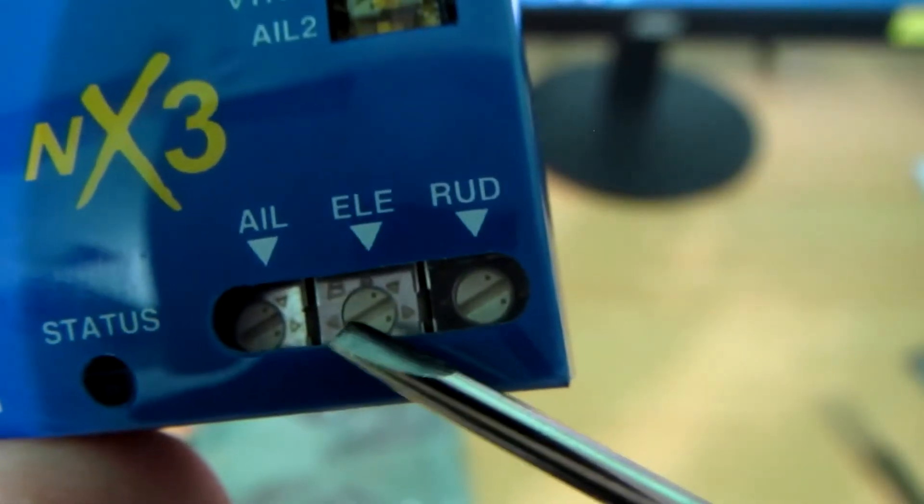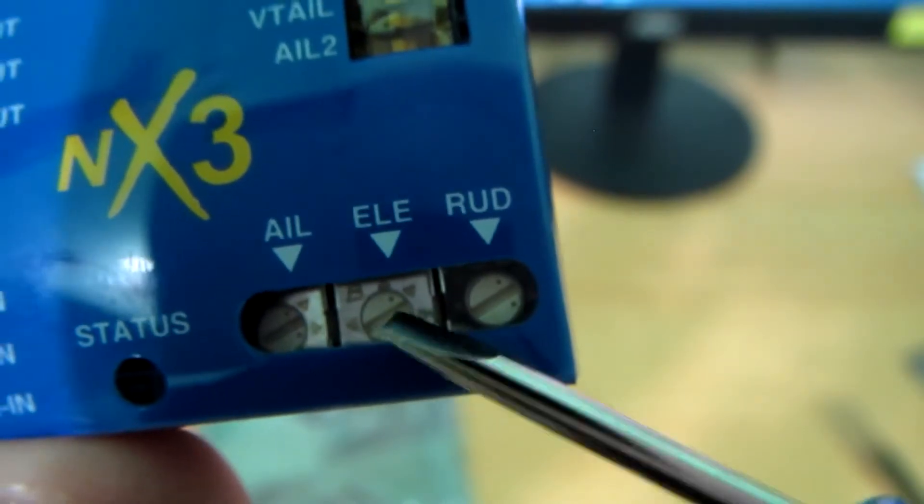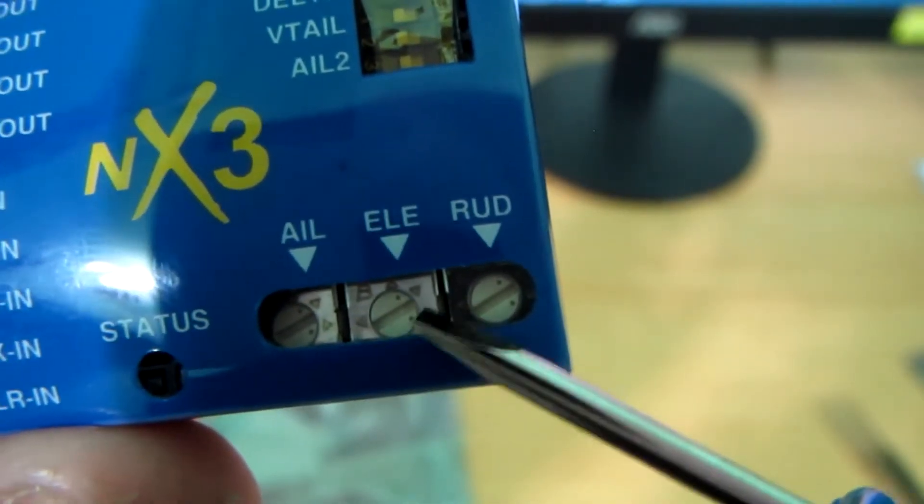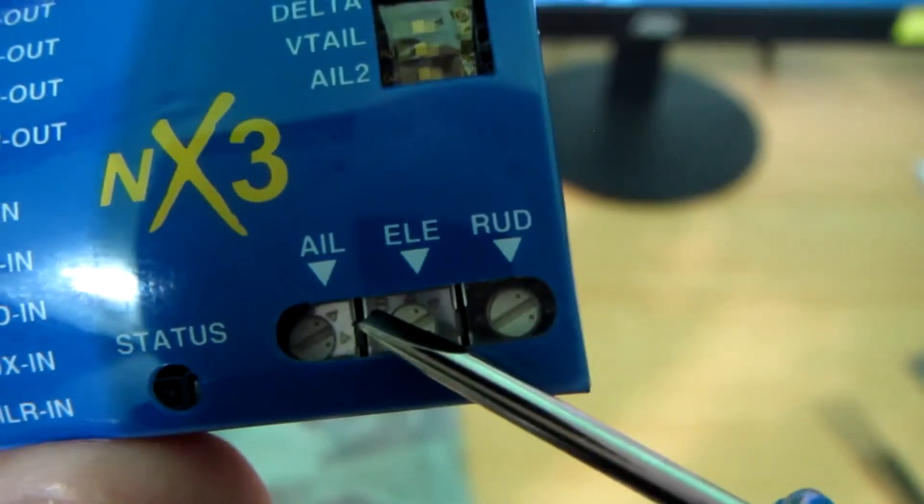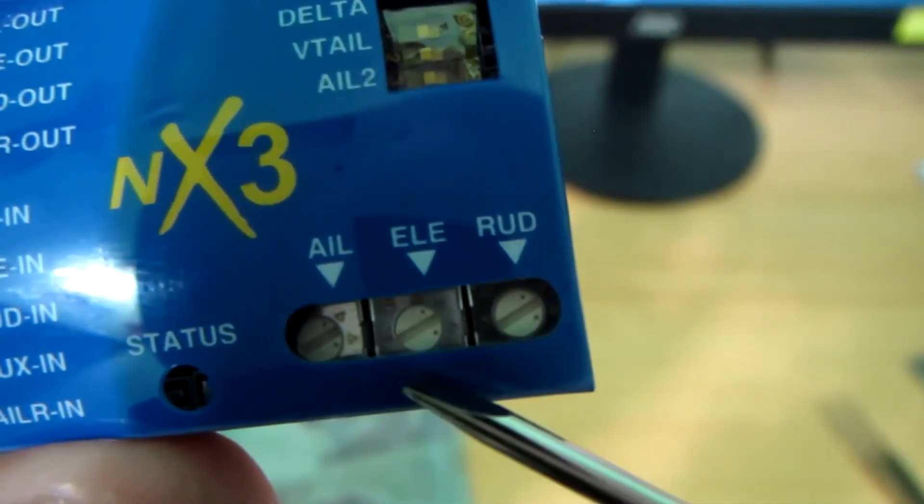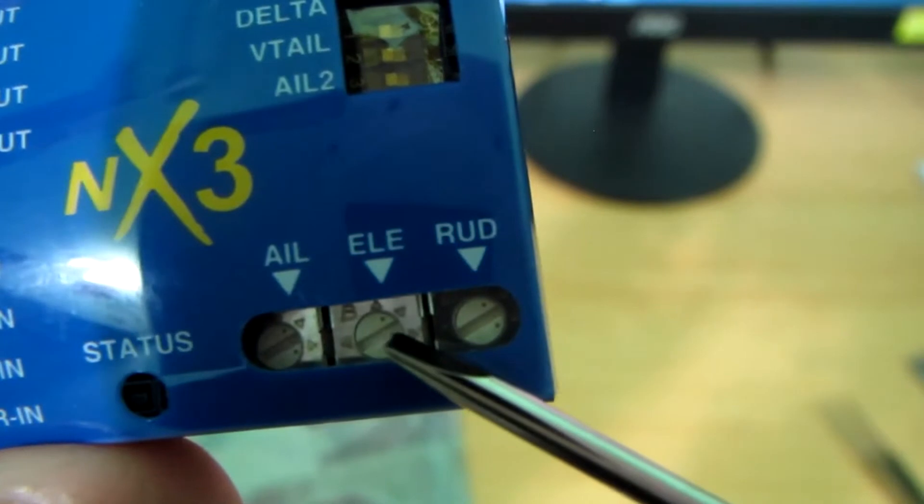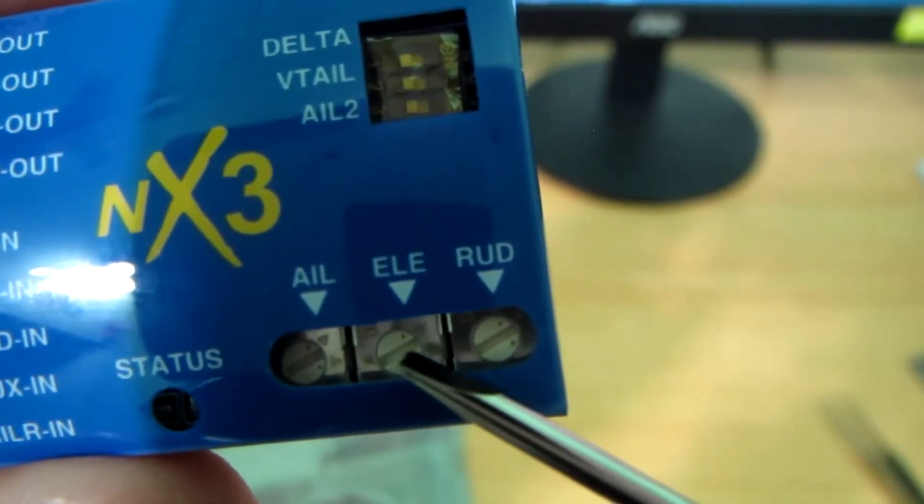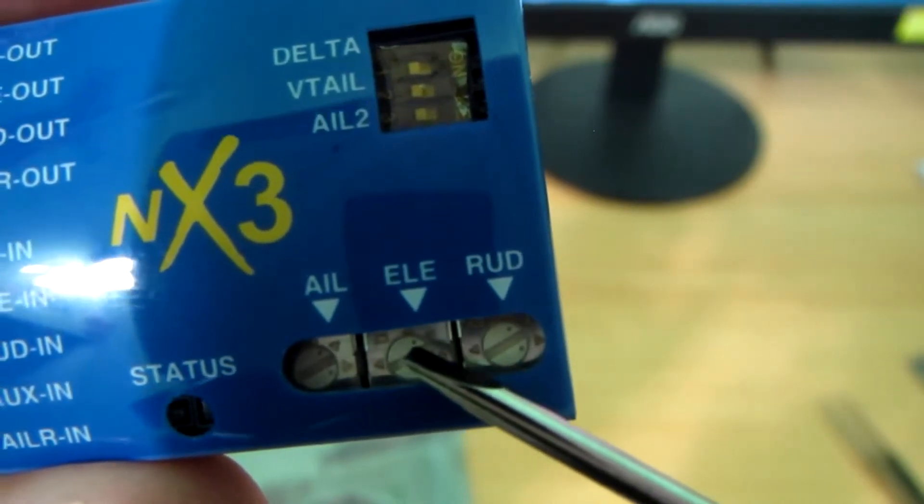If you want to reverse your servo, then just twist it counterclockwise. And you see this is the maximum gain, and this is the gain off. So right now I am in the positive gain. If you need to reverse the servo, then move these dots to this position and you will get the reverse servo.